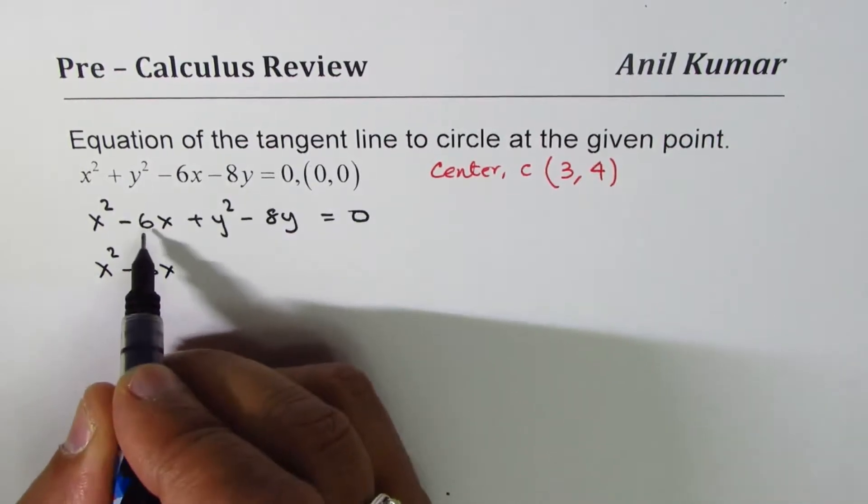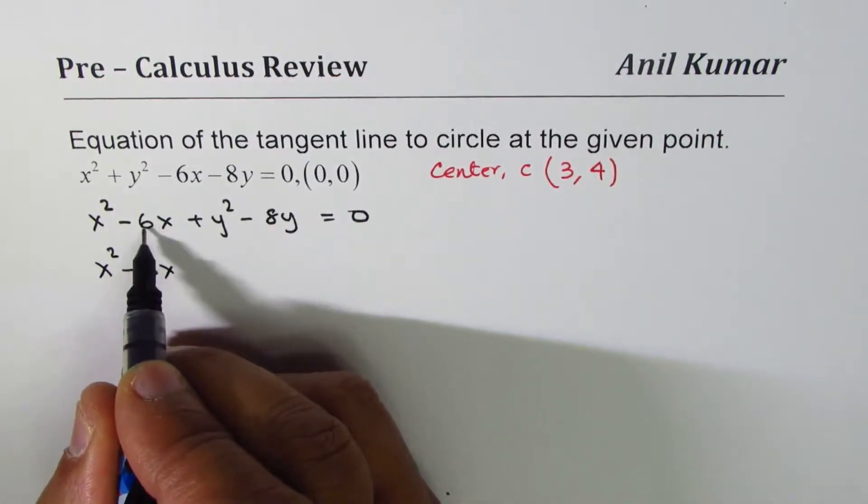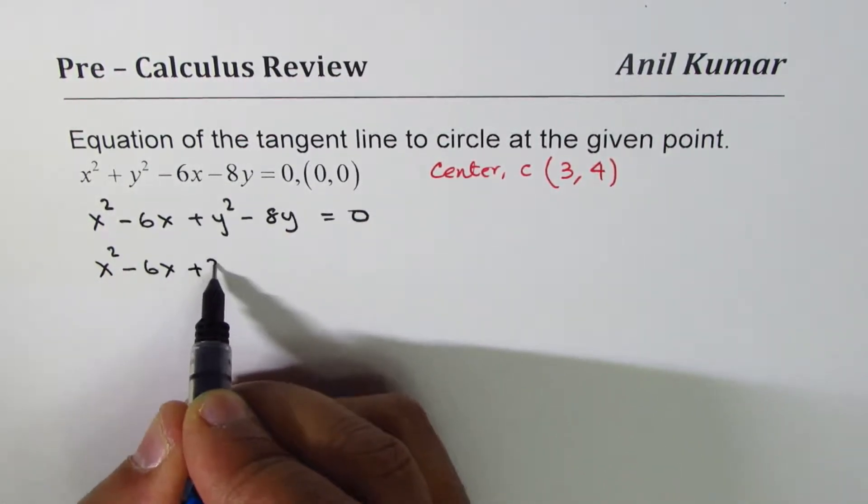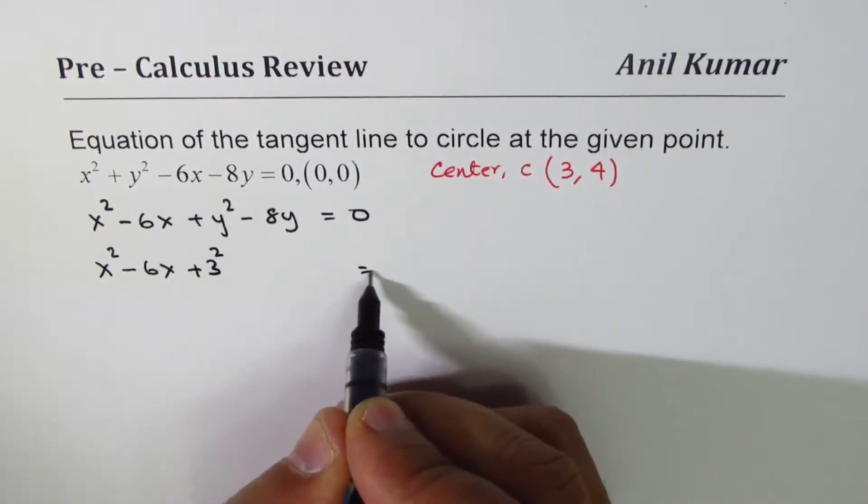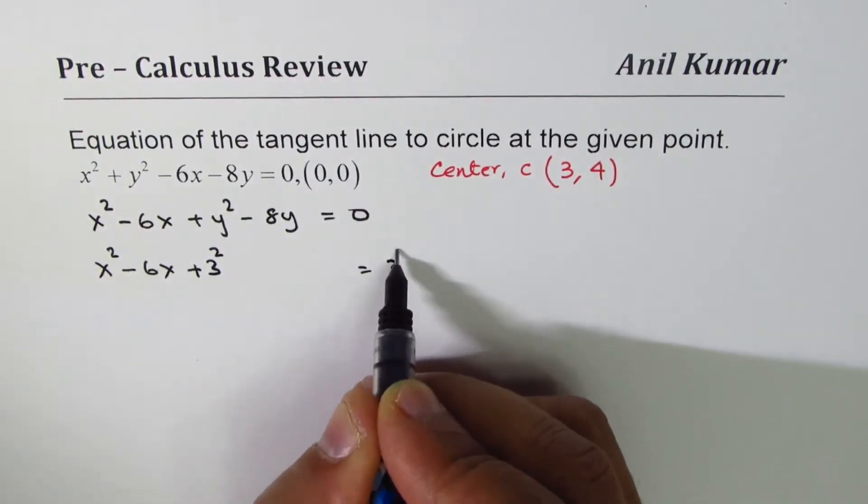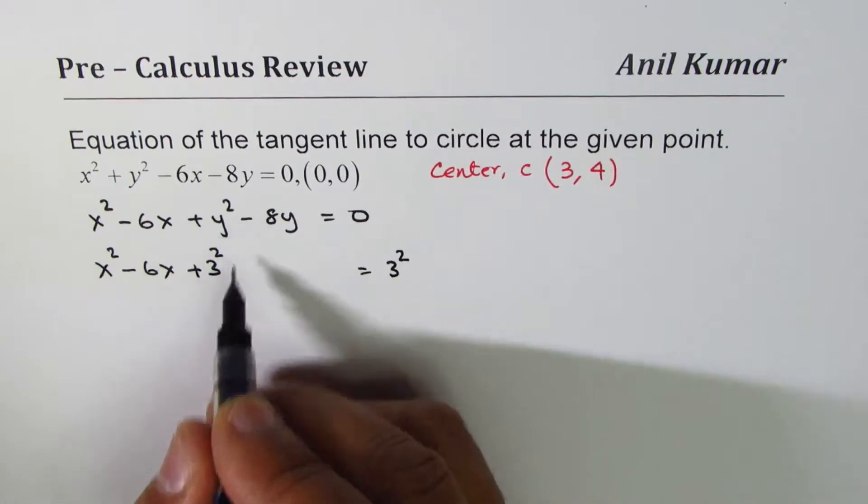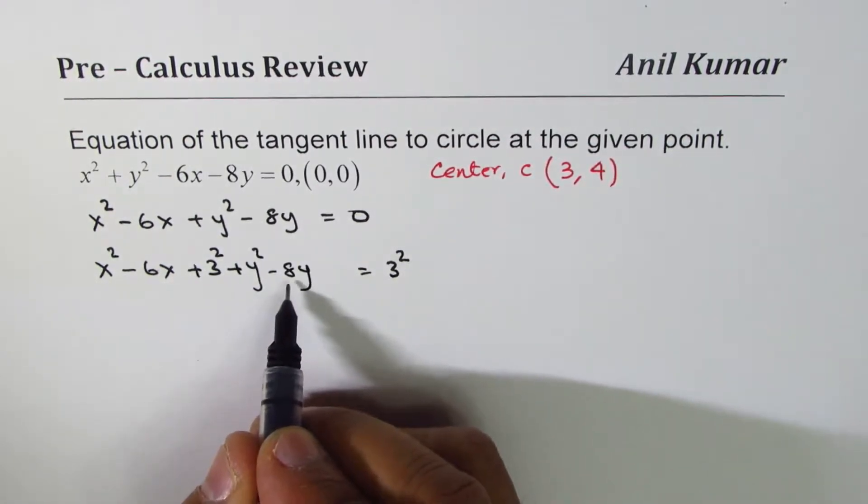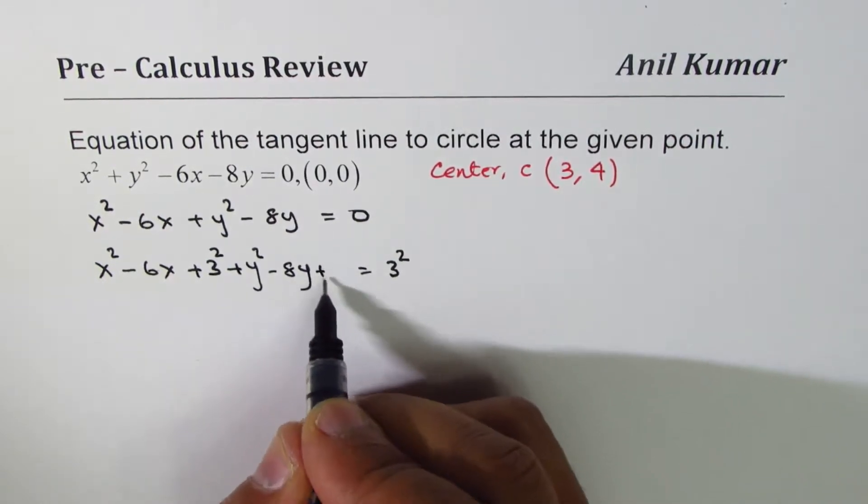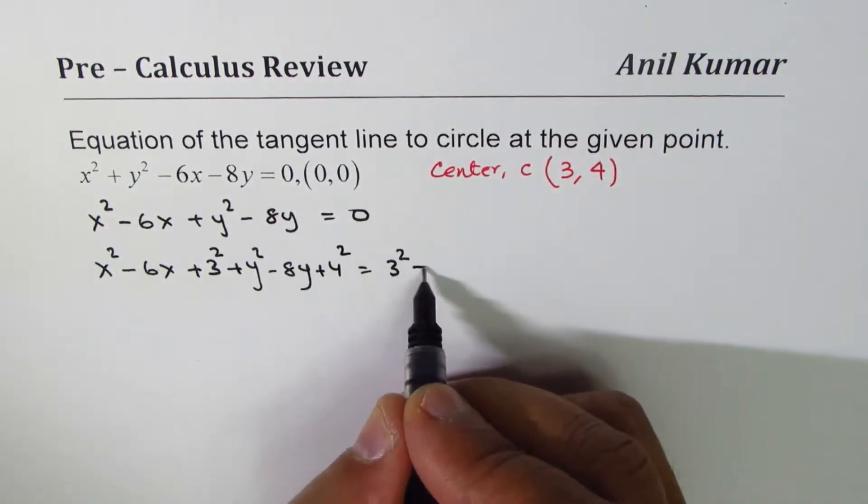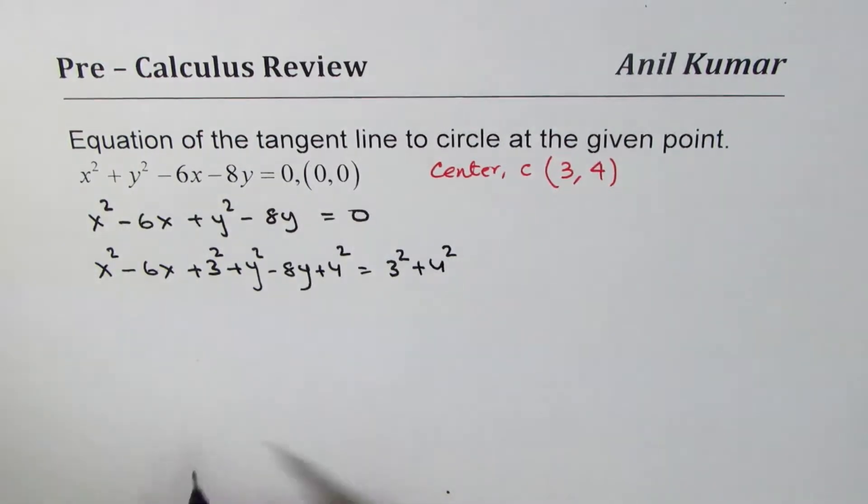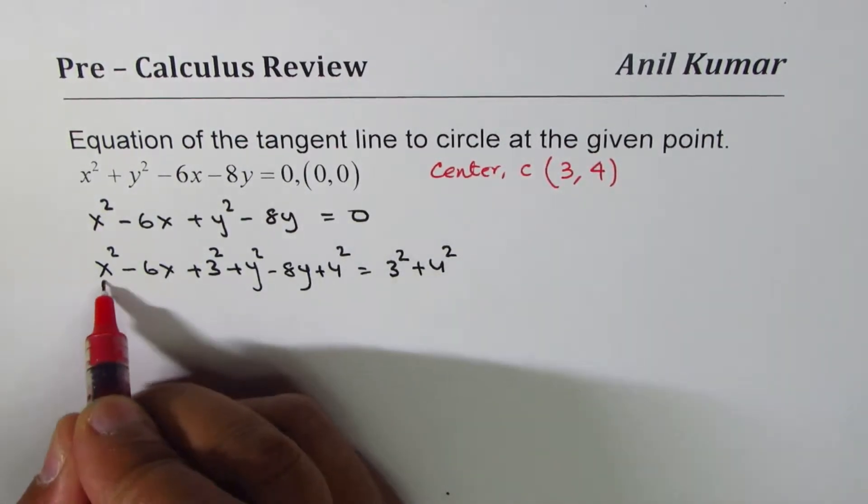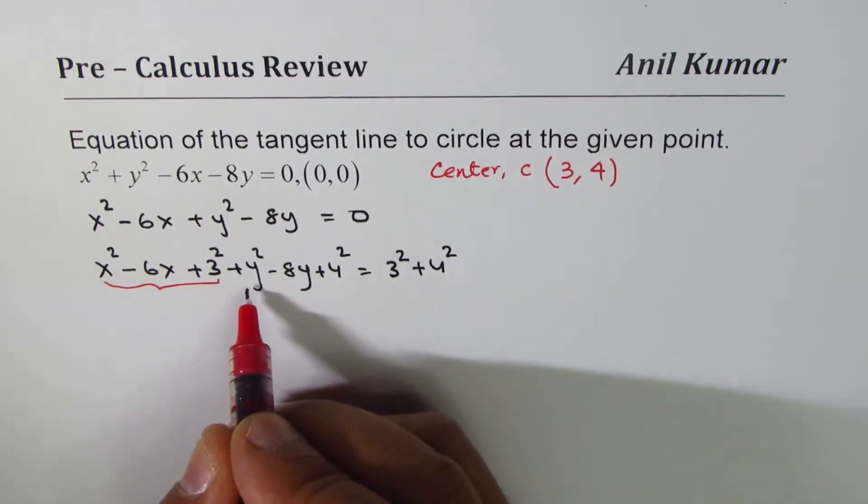We get x² - 6x and that is 3², right? Half of 6 is 3, so we'll add 3² here and we'll do the same on the right side. We have y² - 8y, half of 8 is 4, so we'll add 4², so we'll add 4² on both sides.